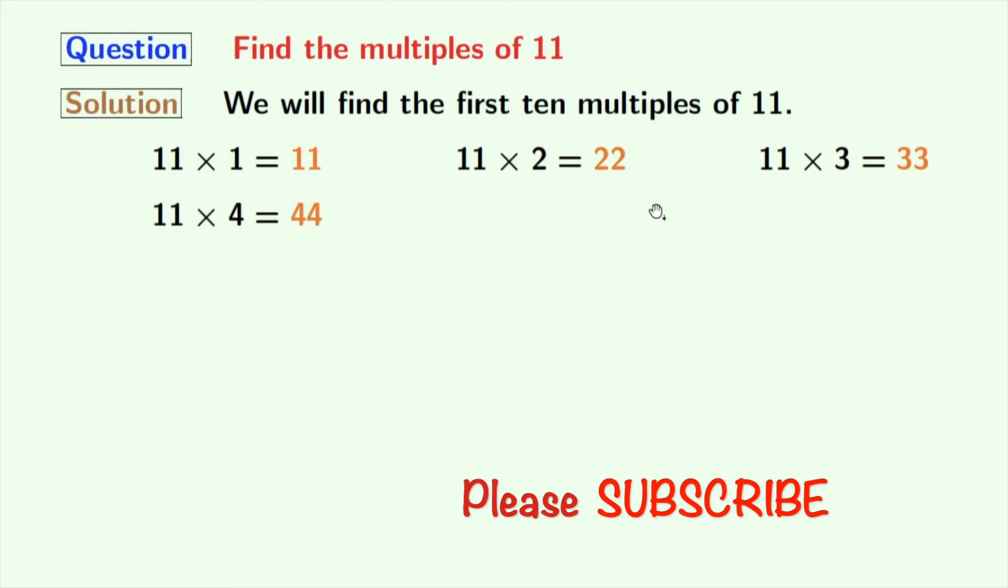Multiplication of 11 and 4 gives us 44. Multiplication of 11 and 5 gives us 55. Multiplication of 11 and 6 gives us 66.